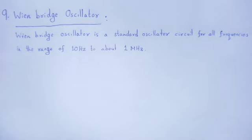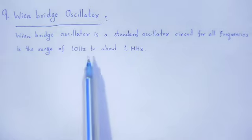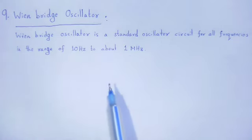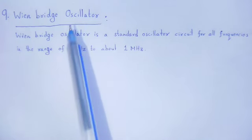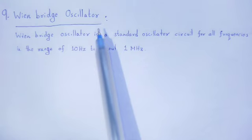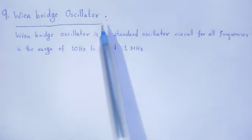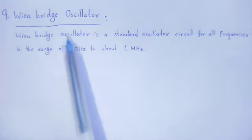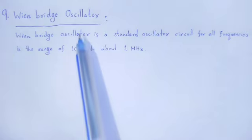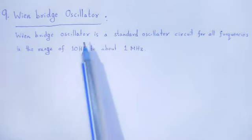The Wien Bridge Oscillator is a standard oscillator circuit for all frequencies in the range of around 10 Hz to about 1 MHz. As it is an oscillator, it is a combination of an amplifier plus a feedback network. This type of Wien Bridge Oscillator can be created by using an op-amp.